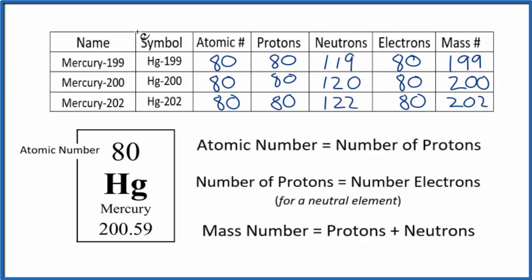Often teachers will give you the number of neutrons and ask you to find the mass number, or give you the mass number and ask you to find neutrons. If you're not given this information, you can go to the periodic table, take this number here and round it to the nearest whole number, and then use that for your mass number.